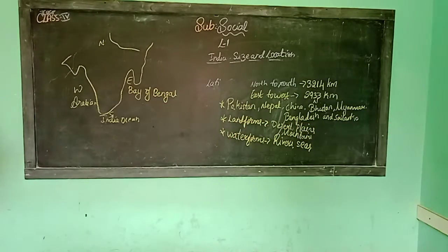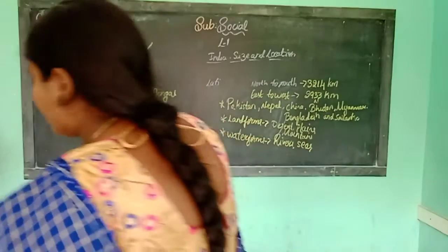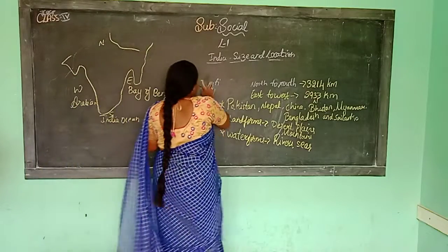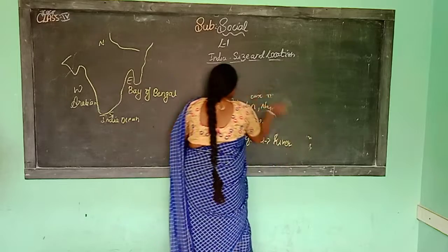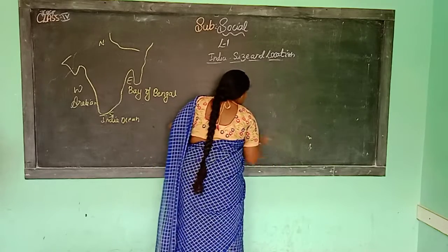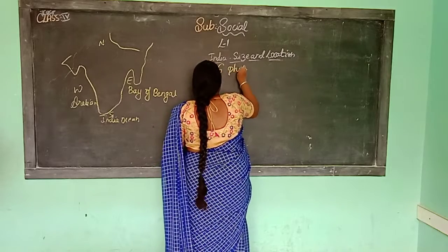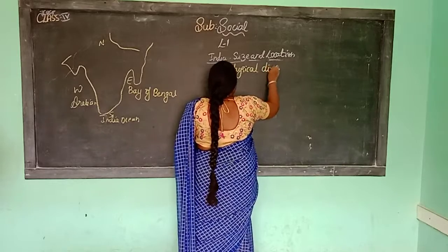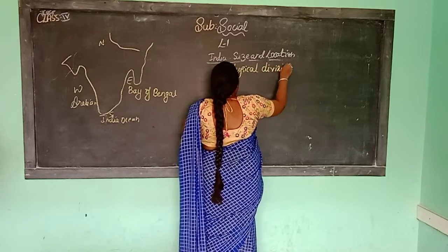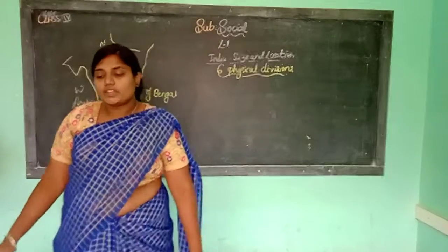India can be divided into six physical divisions based on its physical features. How many physical divisions are there? There are six physical divisions.